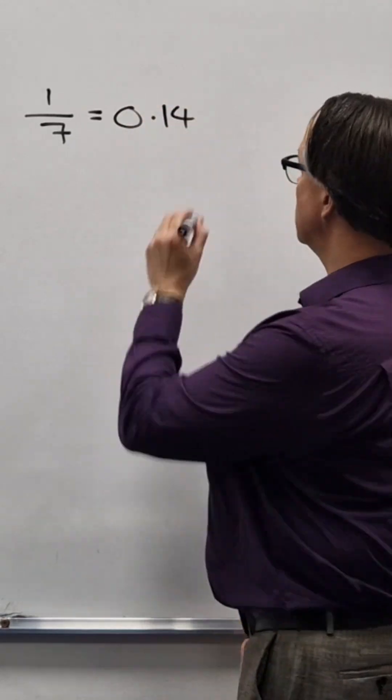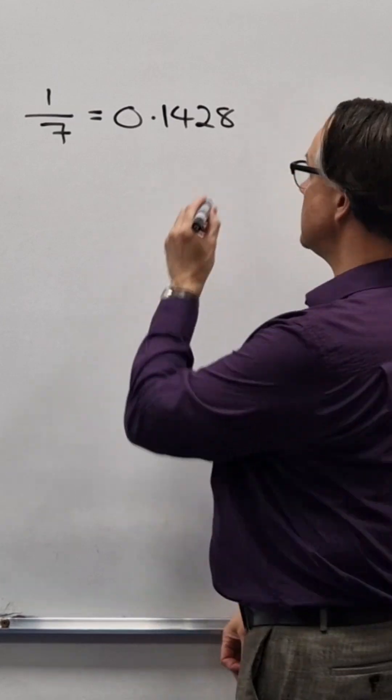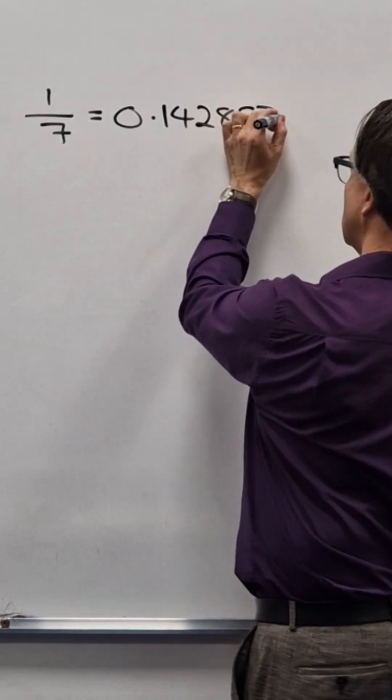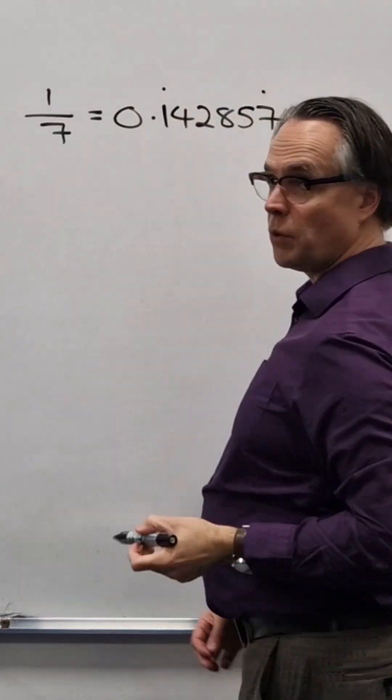Double 14, get 28. If we double 28 we get 56 but I'm going to change that to 57 because it's a seventh and that is one seventh as a decimal.